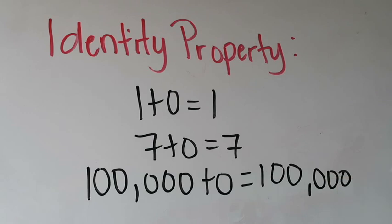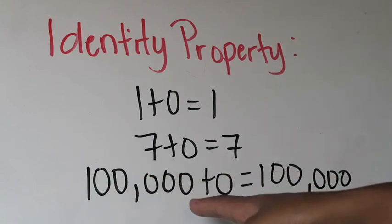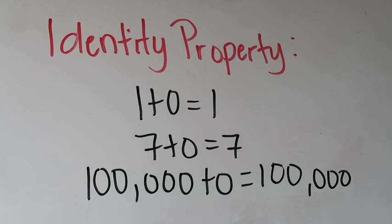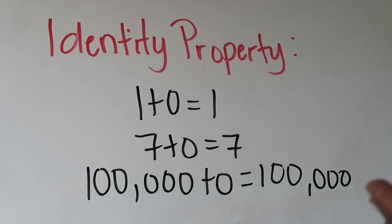Even if I get as large as 100,000, if I take 100,000 plus zero, what's my answer going to be? You should have guessed. My answer is going to be 100,000 based on the identity property of addition. So this one is really easy. If you are adding zero to the number, your number or your sum is going to be exactly the same as that number that you were adding zero to.